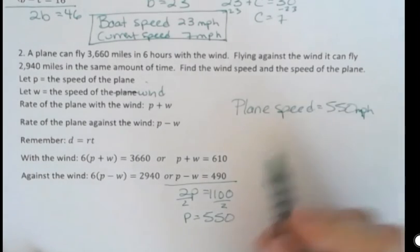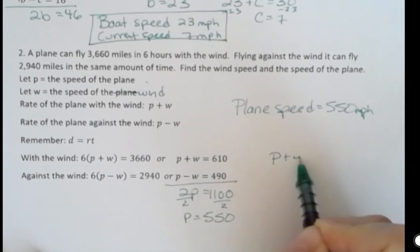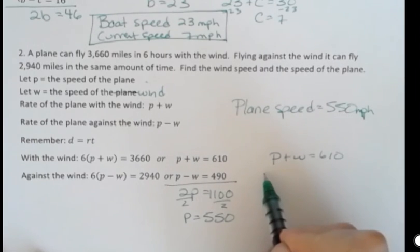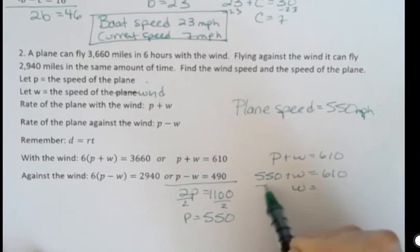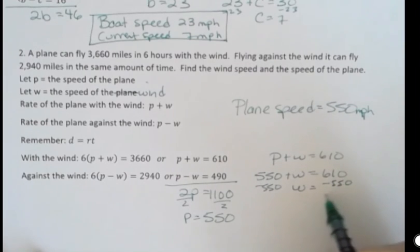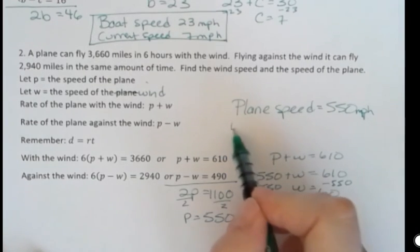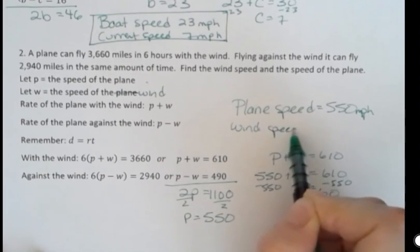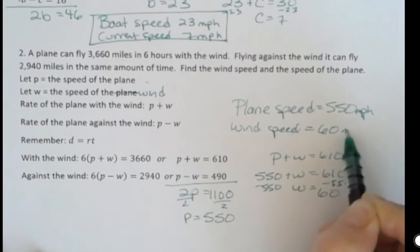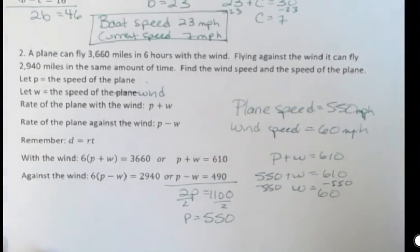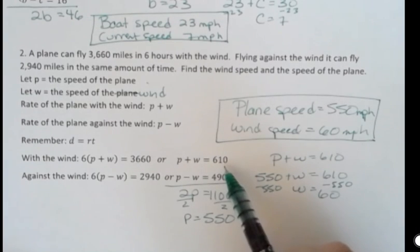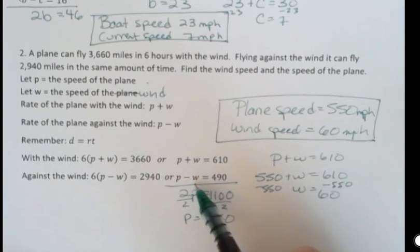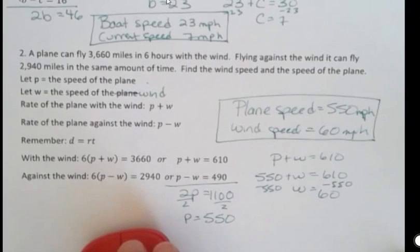If the plane could just fly in still air with no wind, it could go at 550 miles per hour. But it's not doing that. We have the plane plus the wind is 610. We now know the plane was 550. And so we can figure out that by subtracting 550, I get 60. So the wind speed is 60 miles per hour. So we have the plane speed is 550. If I add 60 to that, I'm going to be going 610. If I subtract 60 from that, I'm going to go 490. So that's a typical distance rate and time problem using systems of equations.